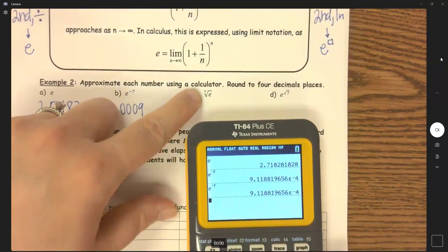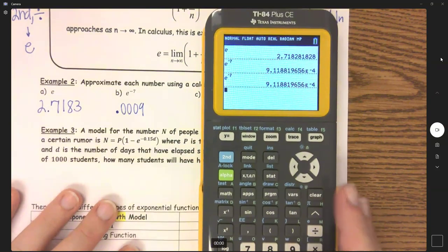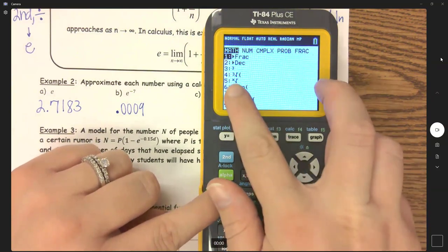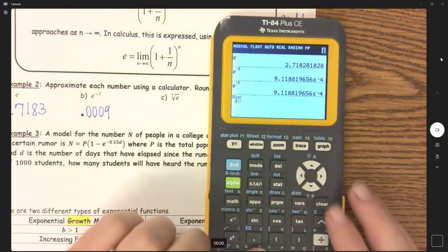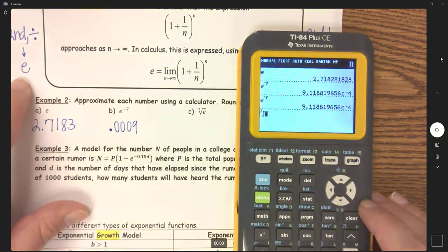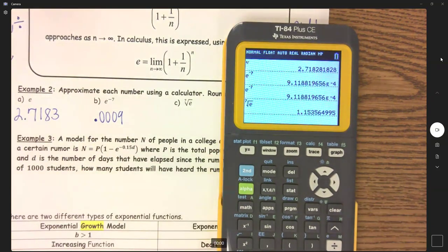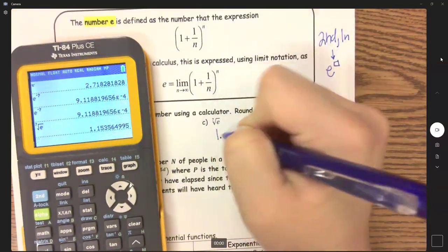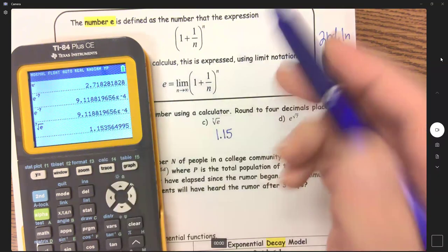Now we need the seventh root of e. If you have this calculator here, all you need to do is hit math and then go down to number five. And you can put in all of that information the way it looks. So we'll do the seventh root. And because that's just e and not e to a power, I'm going to use this right here. So second divide. And if we round that, we get 1.1537, because of that six will go up to a seven.